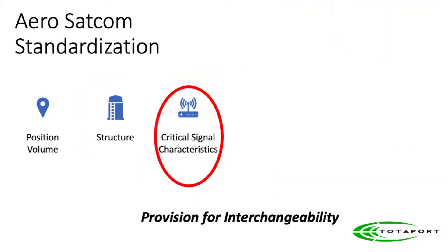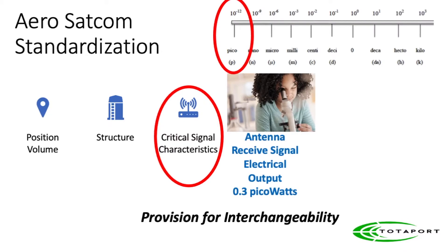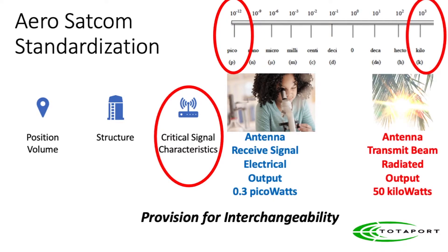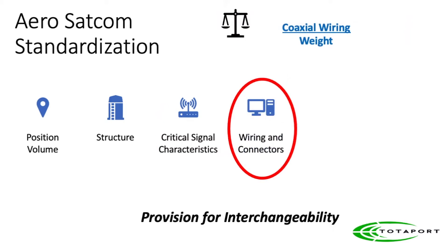Satellite communications involves critical signal characteristics. The receive signal out of the antenna is as weak as 0.3 picowatts. The transmit signal — the beam actually coming off the airplane — can be as much as 50 kilowatts. We have to select just the right coax: as light as possible to support the bandwidth we need, and efficient enough to extend more than 100 feet.